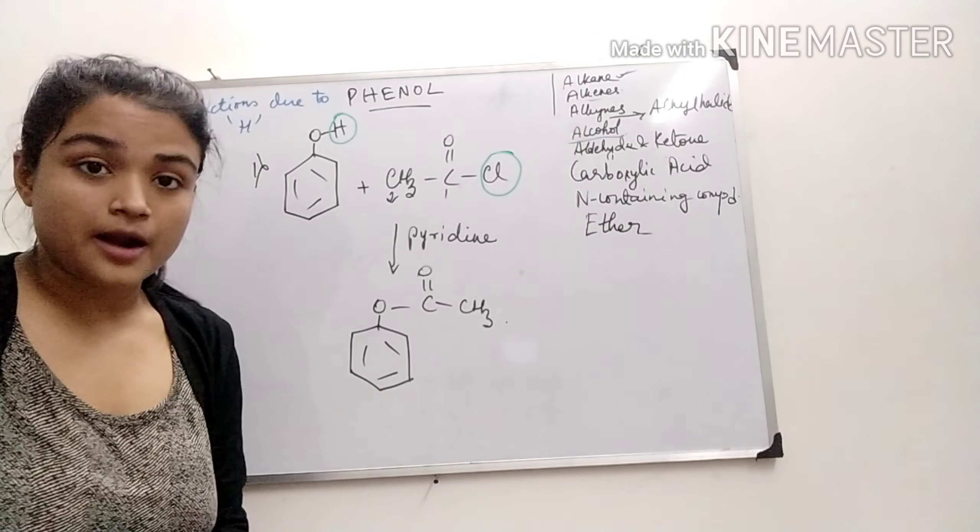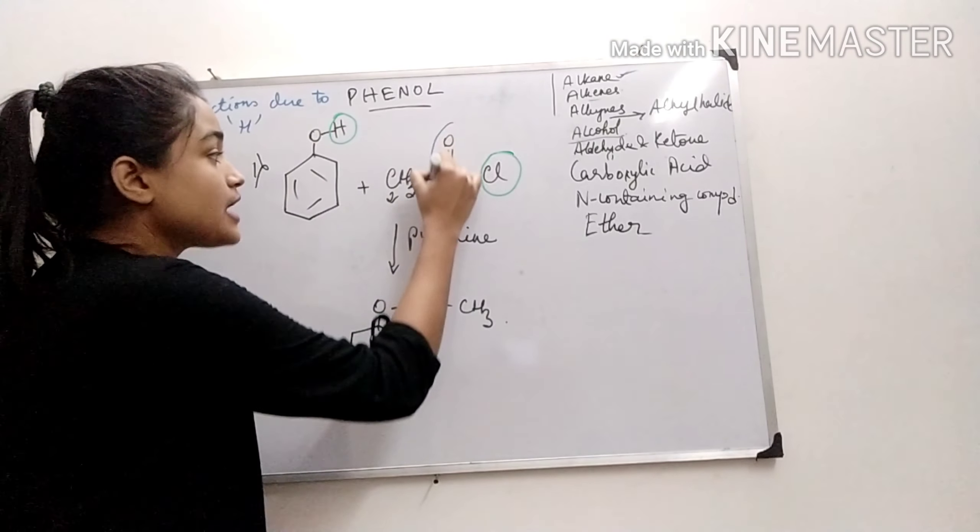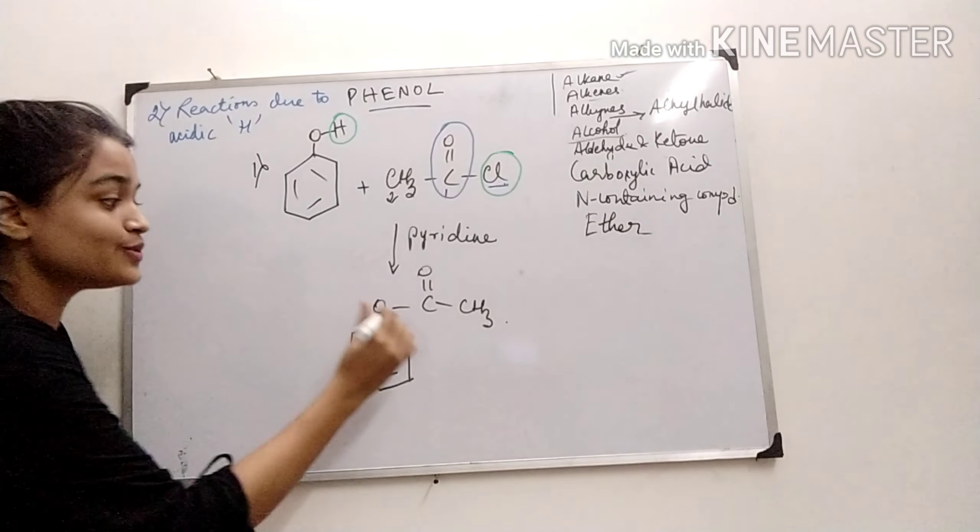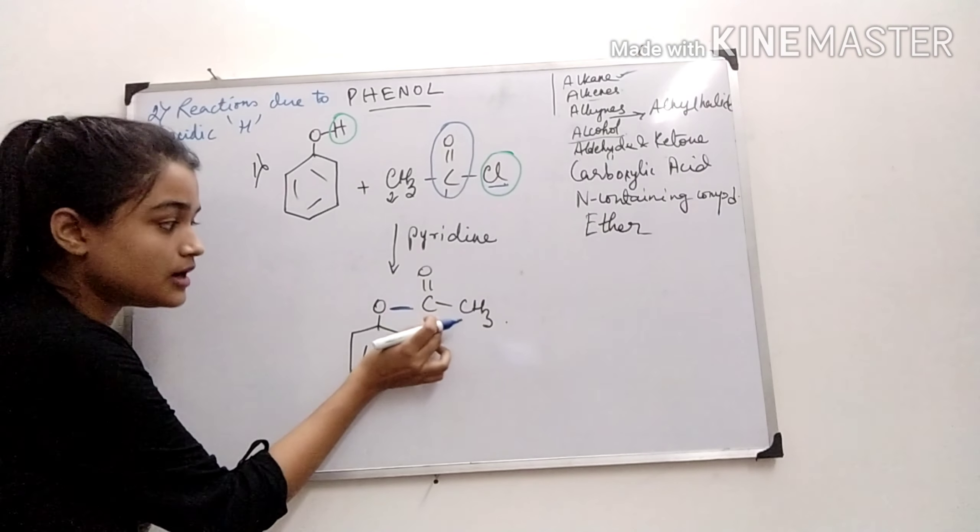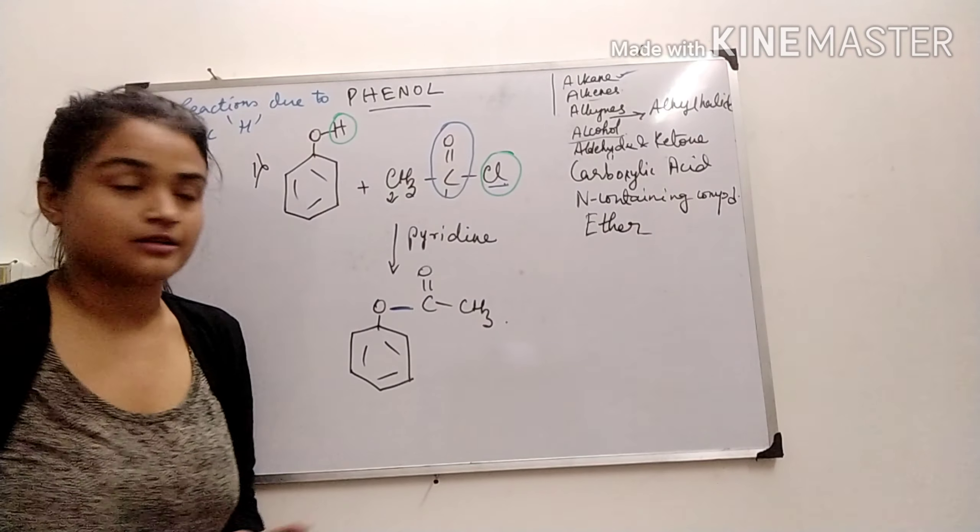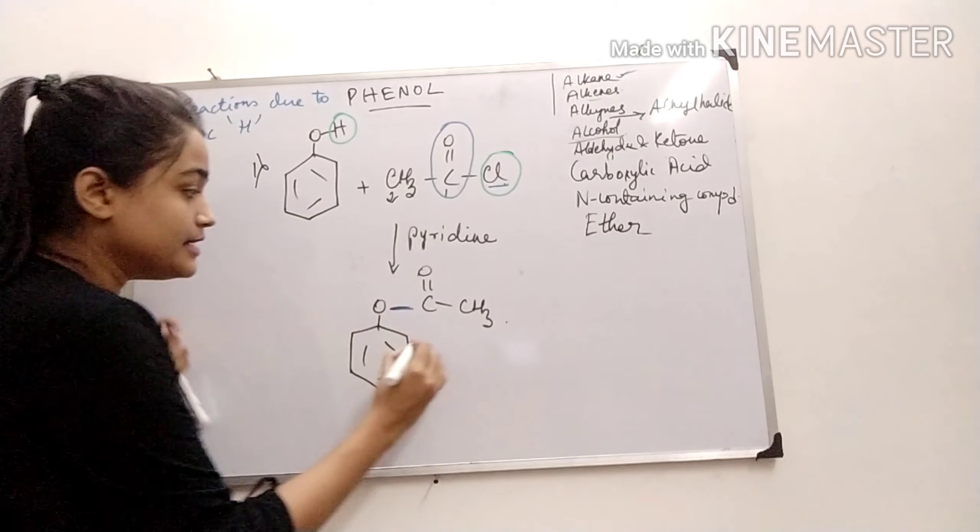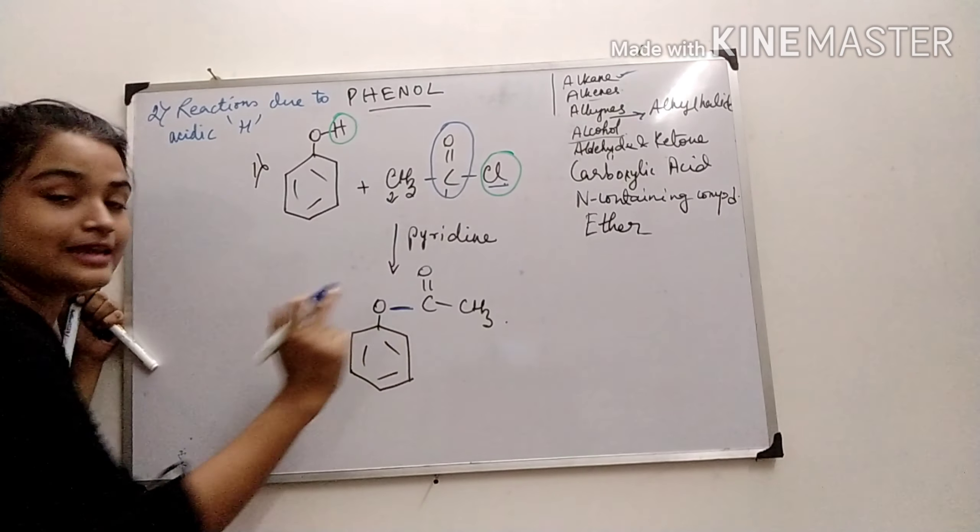The carbonyl carbon which is attached to the chloride group will be attached to this oxygen atom. Don't forget to attach this carbon with this oxygen atom. So this is an ester, and the name of this ester is...